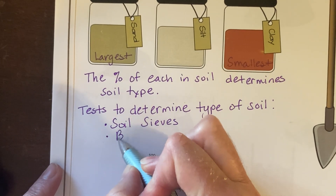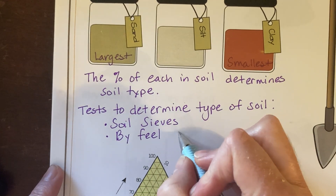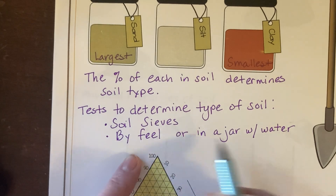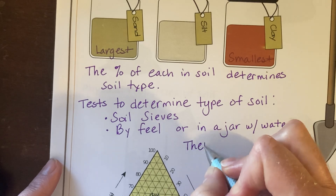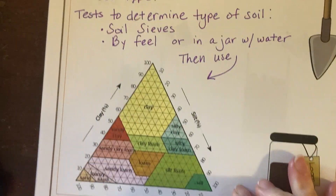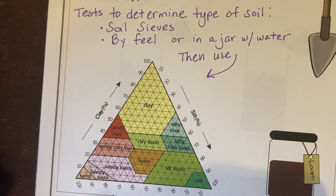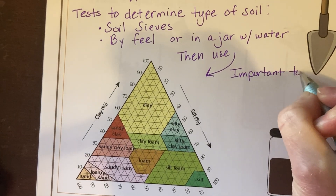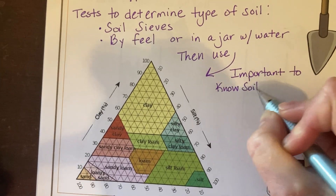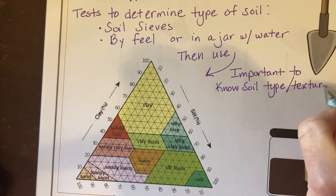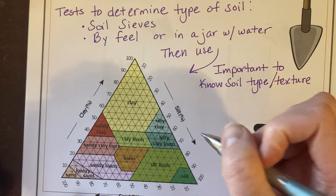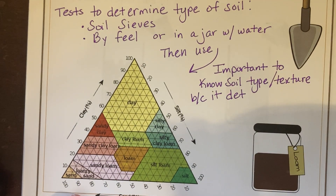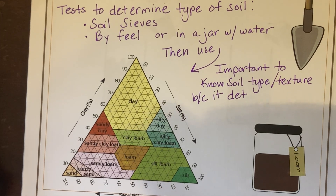You can also do it by feel — that's a lab that can be done — or in a jar with water. Then you use the soil triangle, which is made by the U.S. Department of Agriculture. It's also sometimes called the texture of your soil. The soil type or soil texture will determine how you're going to plow or till your soil, the type of plants that can grow best in it, how you're going to irrigate it, and how you're going to fertilize it.